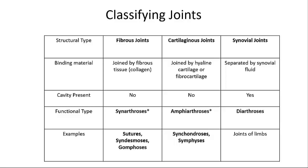The structural classification of a joint is based upon the anatomical components that make up the joint, and there are three main categories: fibrous joints, cartilaginous joints, and synovial joints. Fibrous joints are held together by fibrous connective tissue, lack cartilage, and possess no cavity between the bones. Cartilaginous joints are held together by fibrous connective tissue such as ligaments, and also possess either hyaline cartilage or fibrocartilage. Synovial joints are held together by fibrous connective tissue, hyaline cartilage, and/or fibrocartilage, and they do possess a joint cavity. All synovial joints are diarthrotic and are the most numerous type of joint in the body, permitting the greatest range of motion.